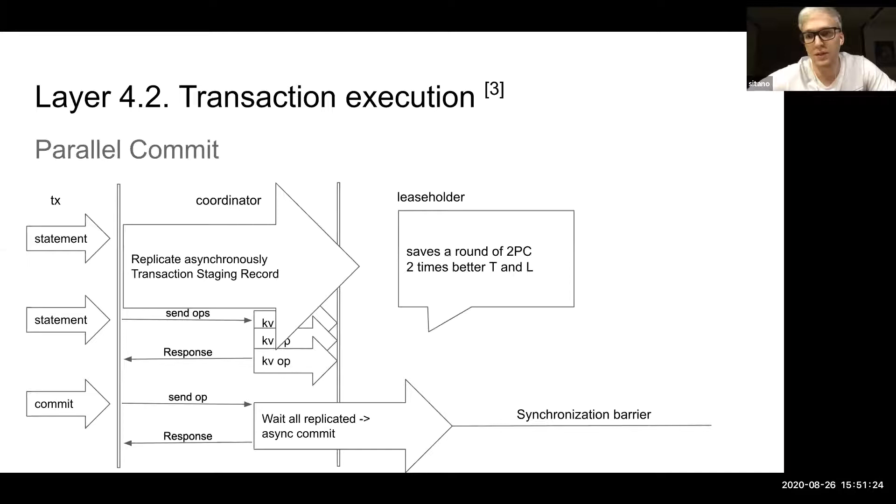Then goes the next stage, which is the parallel commit. Parallel commit basically does the same thing. It asynchronously replicates the transactional staging record in parallel with the operations. When the coordinator receives the commit statement from the user, it evaluates the dependencies as all the keys the transaction has touched. Then it sends it to the leaseholder, which ensures that all of its dependencies were replicated already.